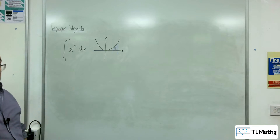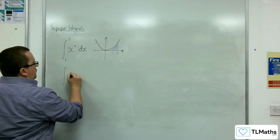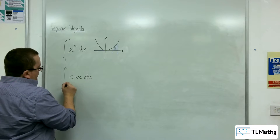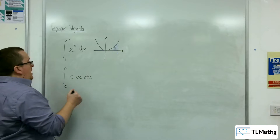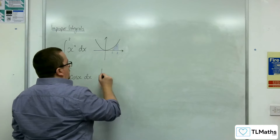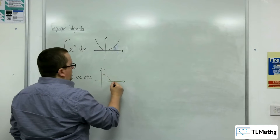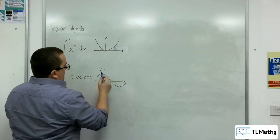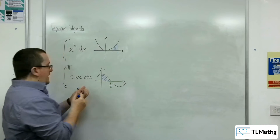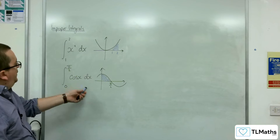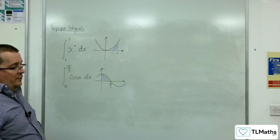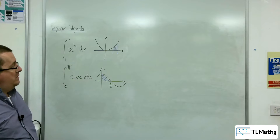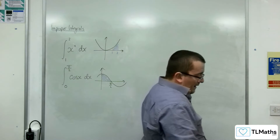Second-year students will have met things like integrating cosine x between 0 and pi over 2. There's the cosine curve, and there's your pi over 2 — working out that area. Nothing wrong with that: cosine is well-defined between 0 and pi over 2, there are no problems, and it is a nice, well-defined finite area.